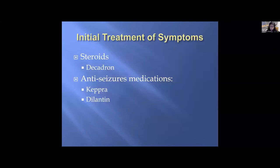Initial treatment for a patient with a primary brain tumor or glioma includes treating symptoms with steroids to decrease inflammation — often the symptoms themselves come from the inflammation. With steroids or Decadron, you can decrease that inflammation and relieve symptoms. Anti-seizure medications such as Keppra and Dilantin may also be useful if a patient presents with seizures or is at risk for developing them.